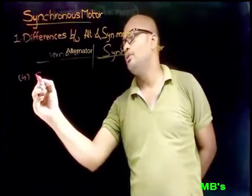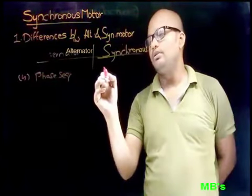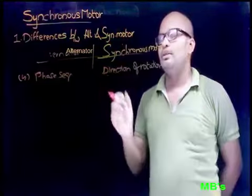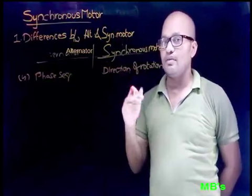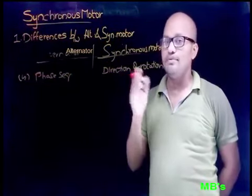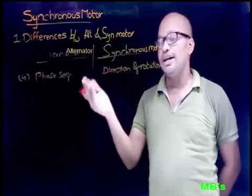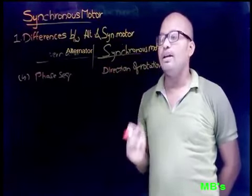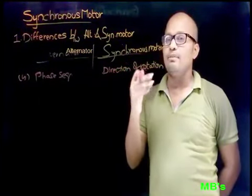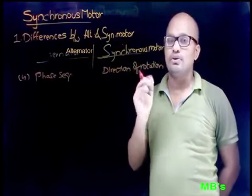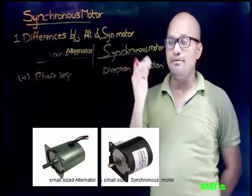The fourth difference is about phase sequence and direction of rotation. In the case of the alternator, the output is AC electrical energy. If it is required to change the phase sequence, we have to change the direction of rotation of the rotor. In the case of the synchronous motor, the output is mechanical energy. To change the direction of rotation of the motor, we must change the input supply phase sequence.